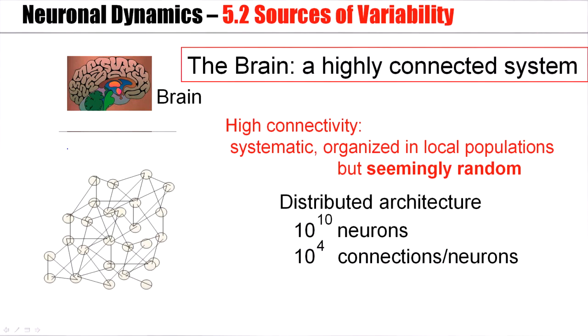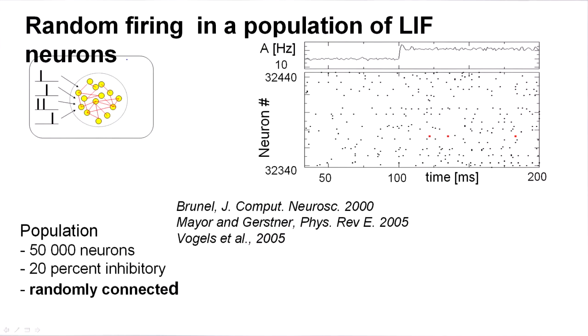So the brain is highly connected. There are connection patterns. Different areas across the brain are more strongly connected to each other than other areas. However, locally, the connectivity looks more or less random. So let's simulate such a local population of neurons with random connectivity. And to do so, we use leaky integrate-and-fire models, the neuron model that we have seen in week one. We have 50,000 neurons in total. 20% of these are inhibitory. The remaining ones are excitatory. And the connectivity between these neurons is random.